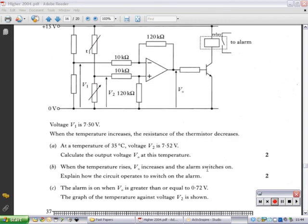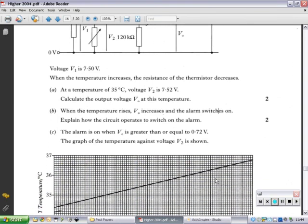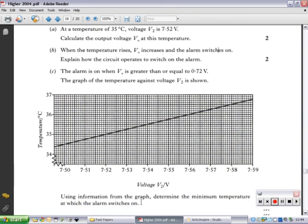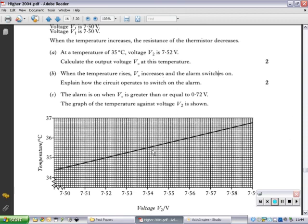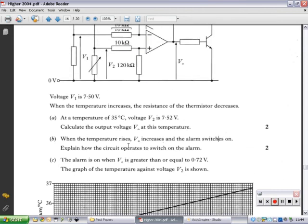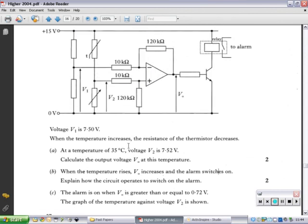So, it's asking us to use information from the graph to determine the minimum temperature at which the alarm switches on. Okay. So, to do this last part of the question, it's saying the graph of the temperature against V2 is shown. Using information from the graph, determine the minimum temperature at which the alarm switches on. So, if you calculate V2, you can then go back and get the temperature. So, to calculate V2, we simply take a differential op-amp formula that we had to start with and rearrange for V2. Since we know Vout, we know RF, we know R1, we know V1 as well.